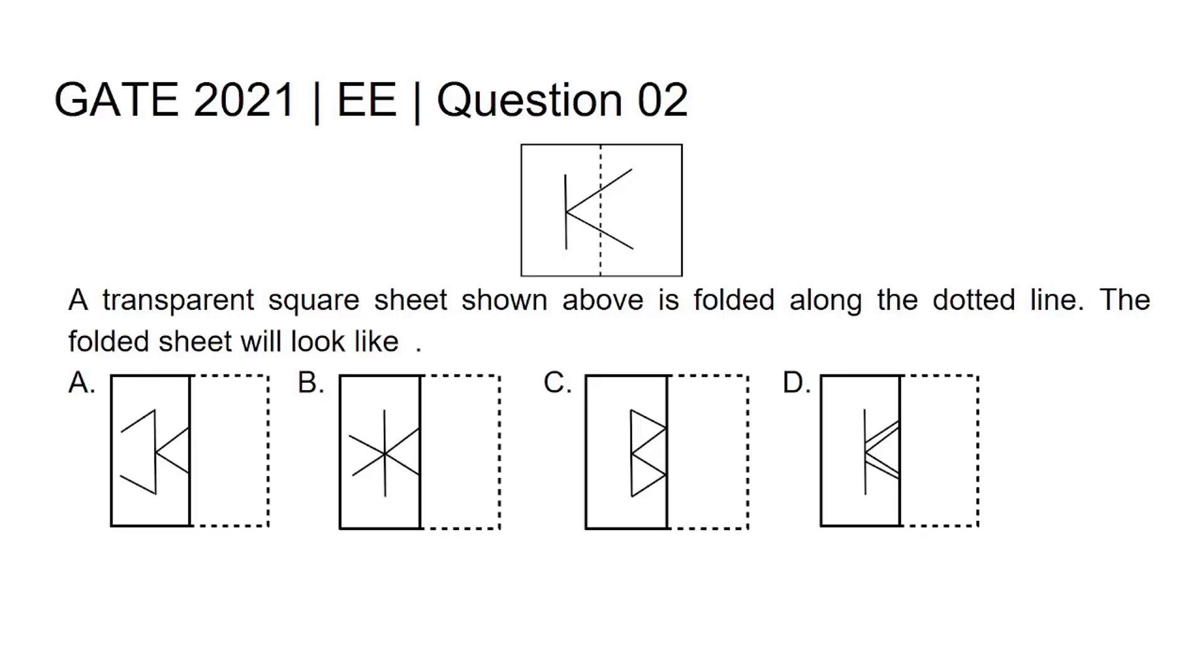A transparent square sheet shown above is folded along the dotted line. The folded sheet will look like - below four choices for the right answers are A, B, C and D.